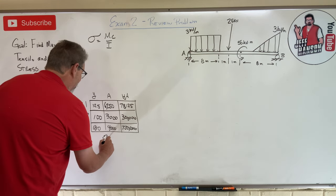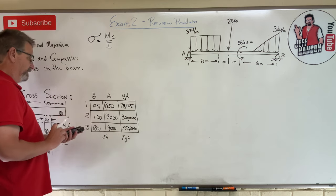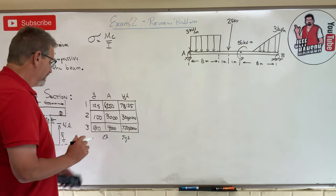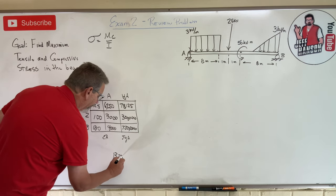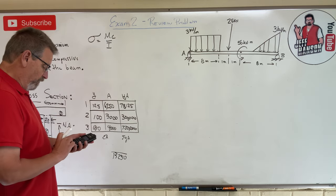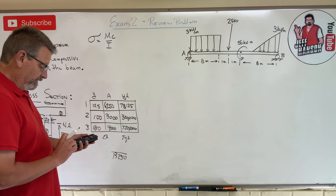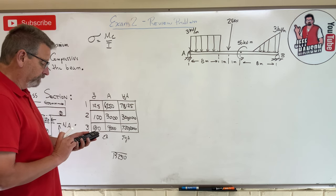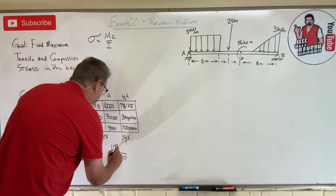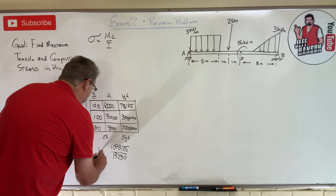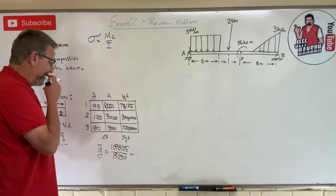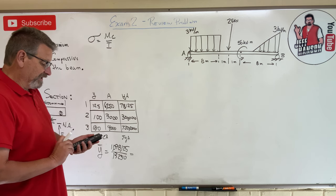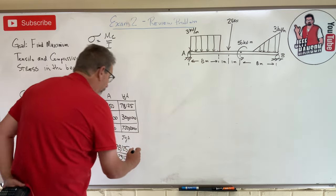Now I need the sum of the areas and the sum of the y·A products to get y-bar. The sum of y·A is 78,125 plus 300,000 plus 720,000, which equals 1,098,125. The sum of areas is 13,250. So y-bar equals 1,098,125 divided by 13,250, which is 82.9 mm from the bottom.